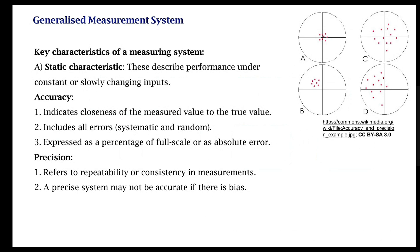If I know the systematic error, I also know ways through which I can remove it, because it's systematic and I can account for it. Accuracy is usually expressed as a percentage of the full scale value. For example, if I'm measuring 100 units and the system is 10% accurate, and the reading is 30, the actual value can be on either side of 30 by 10 percent.